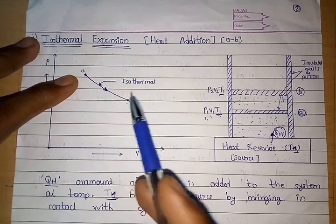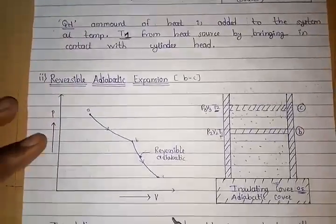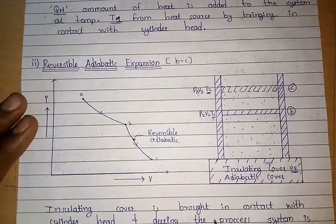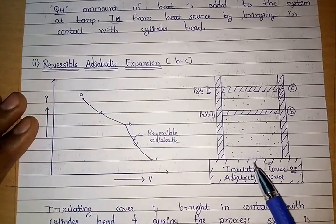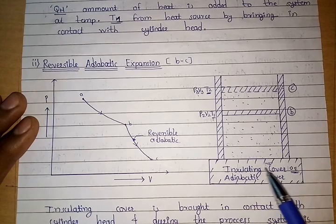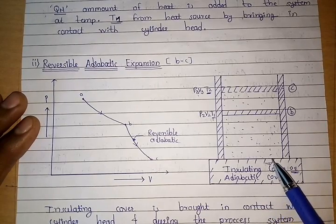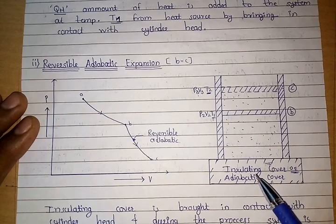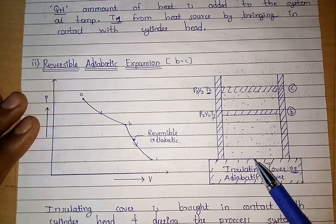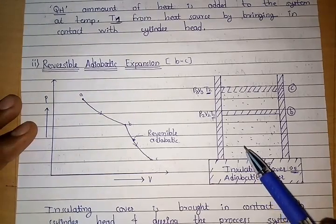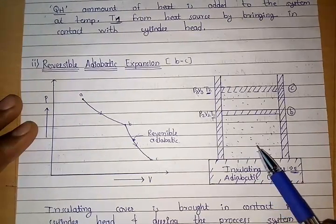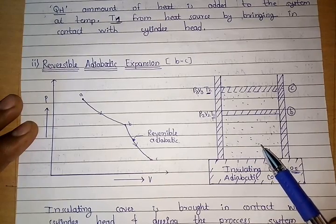The second process in the Carnot cycle is reversible adiabatic expansion. In a reversible adiabatic process, there is no change in entropy and no transfer of heat between the system and surroundings. For this, the heat reservoir is removed and an insulating cover is brought into contact with the cylinder head, restricting any heat transfer between system and surroundings.